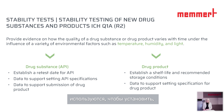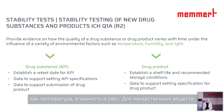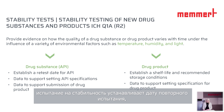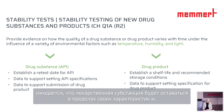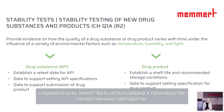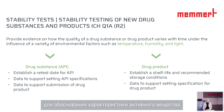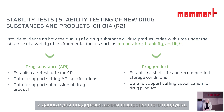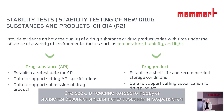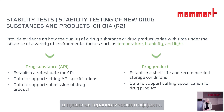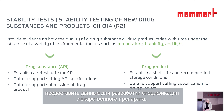Stability testing establishes how a product changes over time under environmental factors such as temperature, humidity, and light. For drug substances, stability testing determines the retest date — the timeframe during which the drug substance is expected to remain within its specification and can be used in manufacturing. It also helps establish data to support setting API specifications and submission of drug products. For drug products, stability testing fixes the shelf life, establishes recommended storage conditions, and supports setting product specifications.